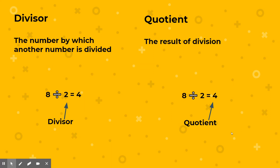Divisor is the number by which another number is divided. In the same problem, the divisor is 2 — we want to make two equal groups out of the 8.